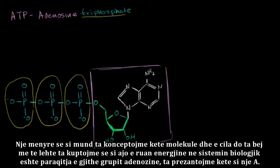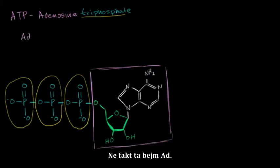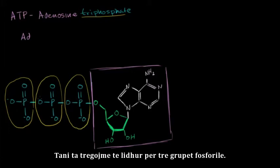So one way that you can conceptualize this molecule, which will make it a little bit easier to understand how it's a store of energy in biological systems, is to represent this whole adenosine group. Let's just represent that as an A. Actually, let's make that an AD. And then let's just show it bonded to the three phosphoryl groups.